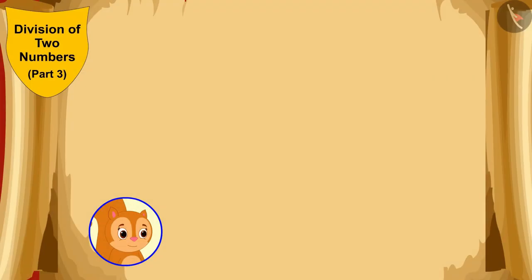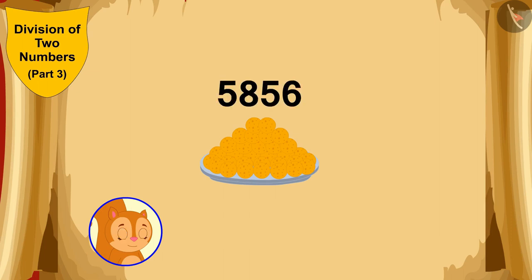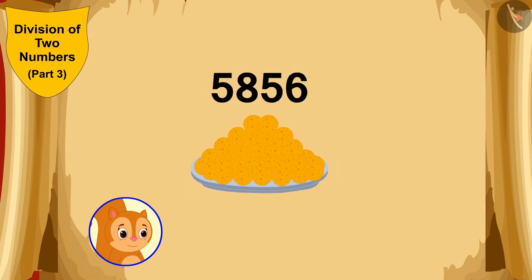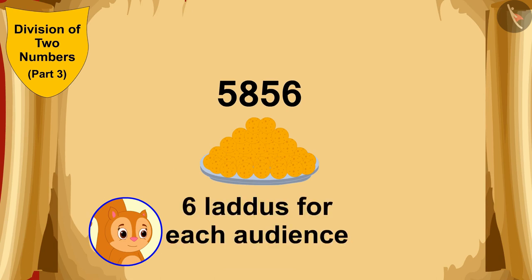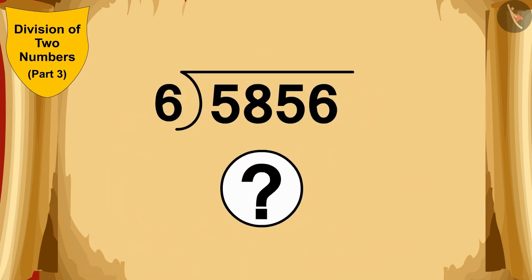Chanda also has to arrange laddus for the audience coming to watch the play. Chanda has a total of 5,856 laddus. If she has to arrange 6 laddus for each audience member, can you guess if Chanda has enough laddus for 976 spectators?